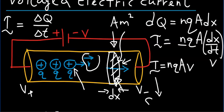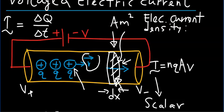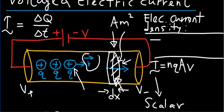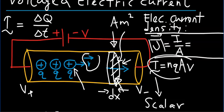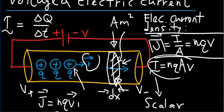Note that electric current is a scalar quantity. Another quantity of calculational importance is the electric current density J. This is a vector, and its magnitude is defined as the electric current in ampere divided by the cross-sectional area. From this equation, the magnitude of electric current density is given by J = nQv. Since drift velocity is a vector on the right-hand side, electric current density is a vector as well. The unit for electric current density is ampere per meter squared.